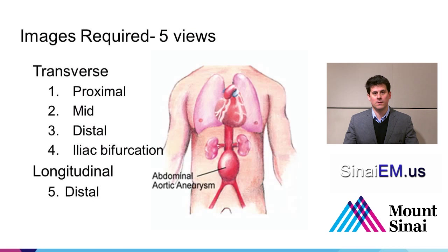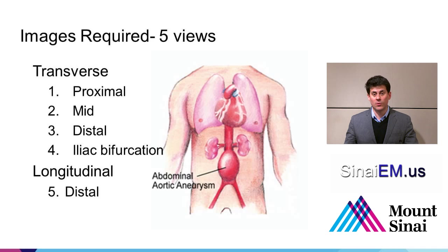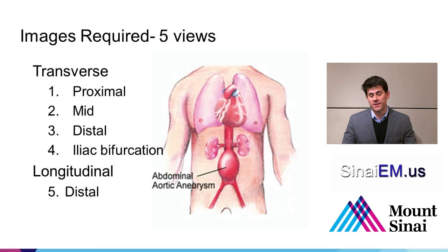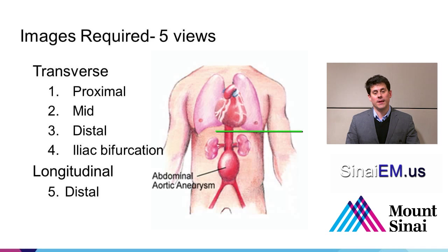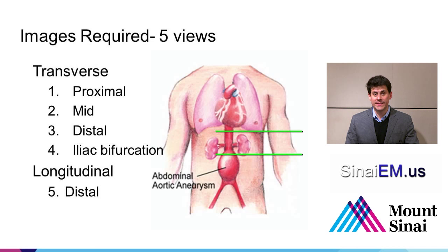Most authors recommend four to five views of the abdominal aorta. You're evaluating the entire aorta — following it in real time through every centimeter — and saving four to five representative images. These should include: somewhere through the proximal aorta around the celiac or superior mesenteric artery just below the xiphoid; a mid-aorta view near the renal arteries; the distal aorta just above the iliac bifurcation; and the bifurcation point itself — all in transverse view. A longitudinal view is also recommended, best performed distally since that's the most common location for aneurysms.